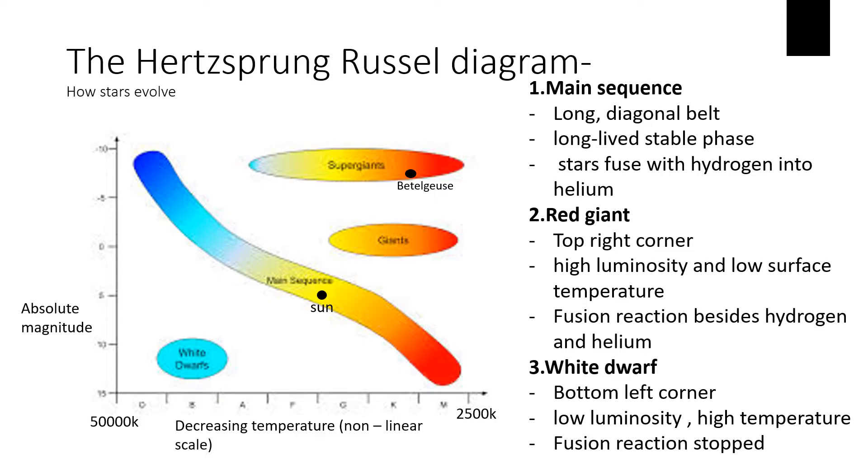Now the key thing about the Hertzsprung-Russell diagram is that when it was first conceived, people thought if they plotted the luminosity, so when we say absolute magnitude, that's a measure of how bright the stars are, against their temperature, then we would get a random distribution of stars. But it turns out that the vast majority of stars are on this broad kind of sausage region called the main sequence.